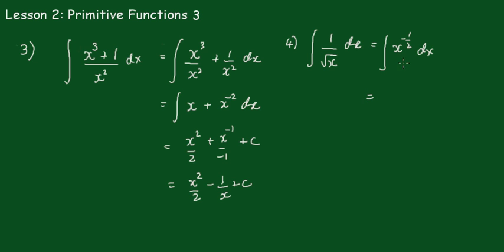When we add 1 to that index, we get x to the 1 half over a half plus the constant, which the half becomes 2 and the x to the half becomes the square root of x plus the constant.